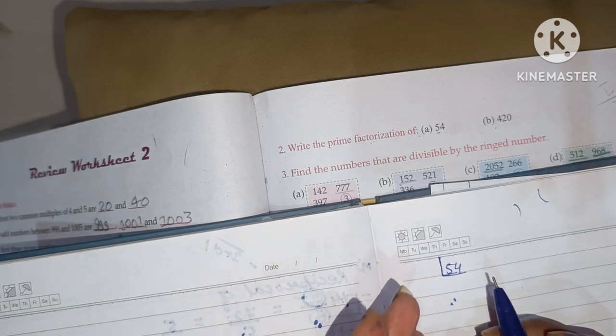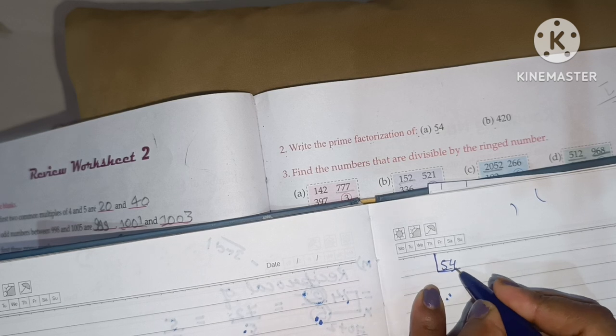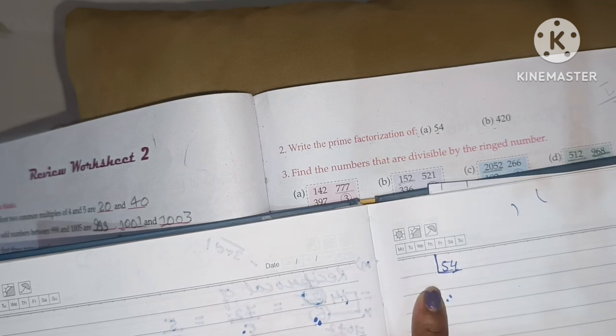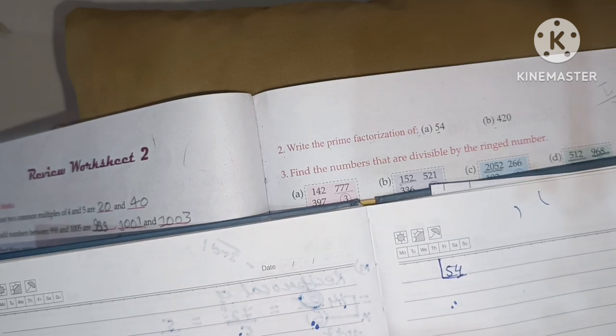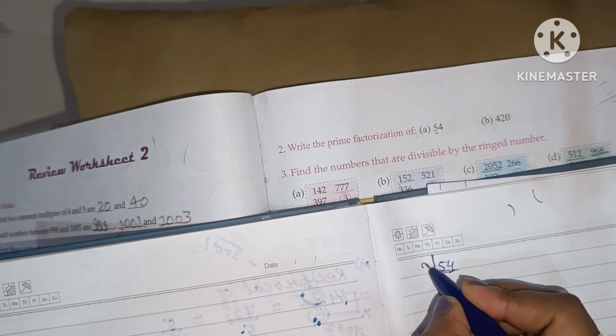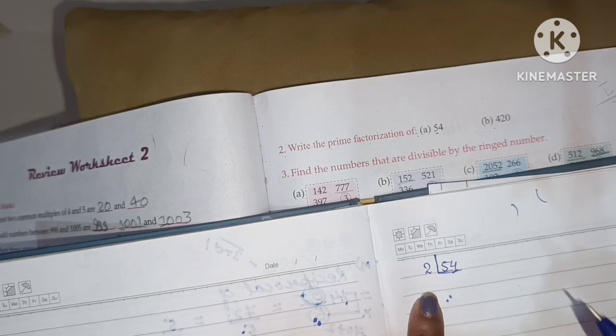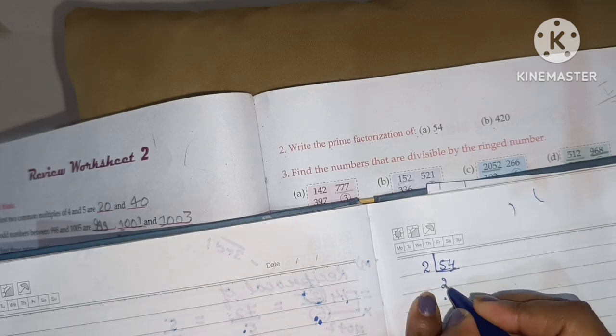So, 2 is the first one. Because this one is an even number, we will divide this number by 2. If we will divide 54 by 2, we will get here 27.